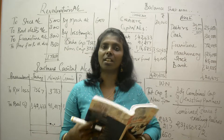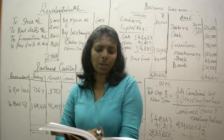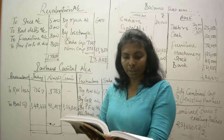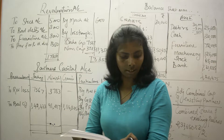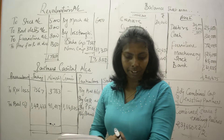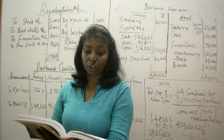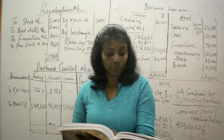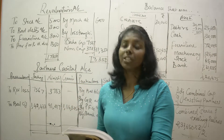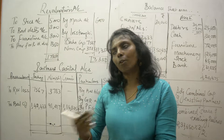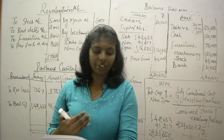I've taken reference from Illustration 65, page number 4.74 of the T.S. Grewal book. In this problem, Sahaj and Nimish are partners, and Gauri is getting admitted. They are sharing profits and losses in the ratio of 2:1. The balance sheet is given along with the adjustments.